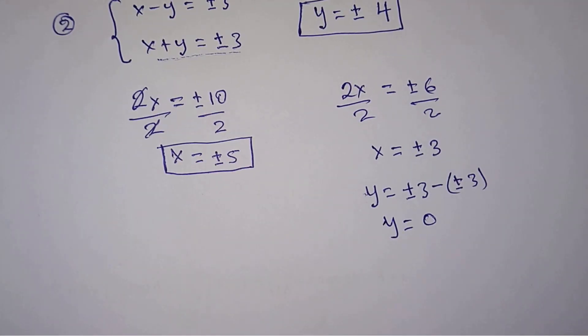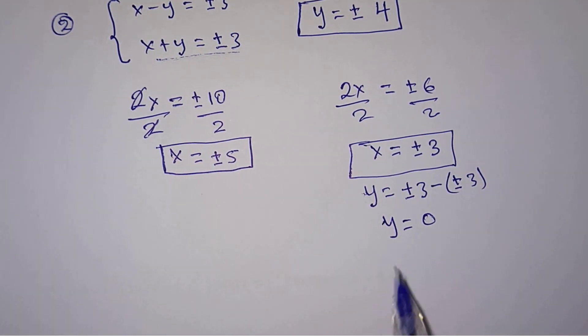So when x is equal to plus or minus 3, we have y to be 0.